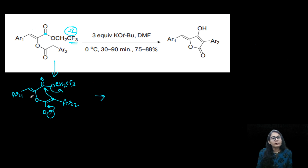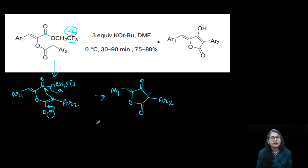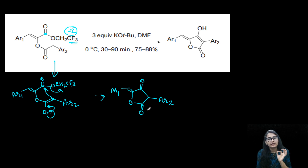So how many membered ring again? One, two, three, four and five — a five-membered ring. Here is the ketone group, here is the carbonyl. One Ar2 over here and the other Ar1. Now, since this part is already an ester and you are having the beta-keto ester again...